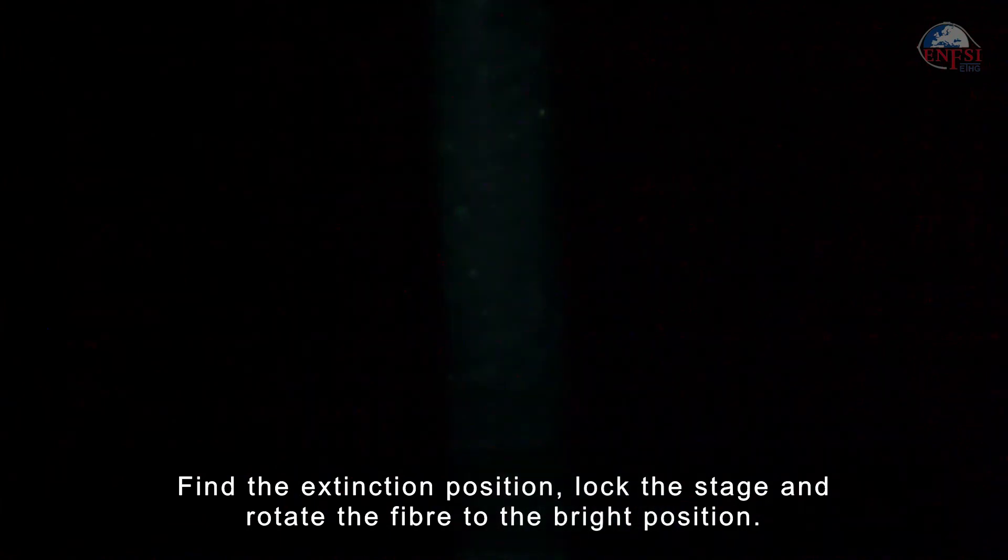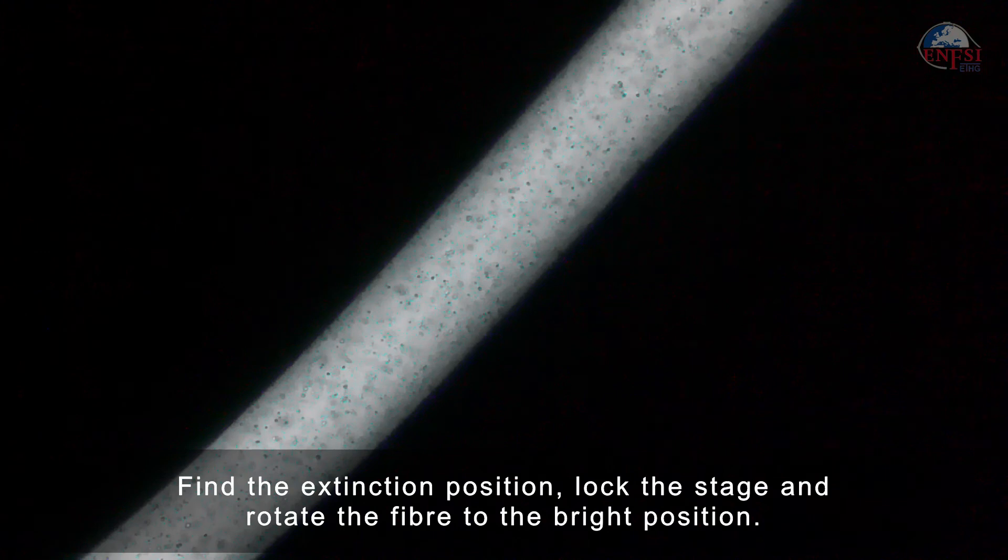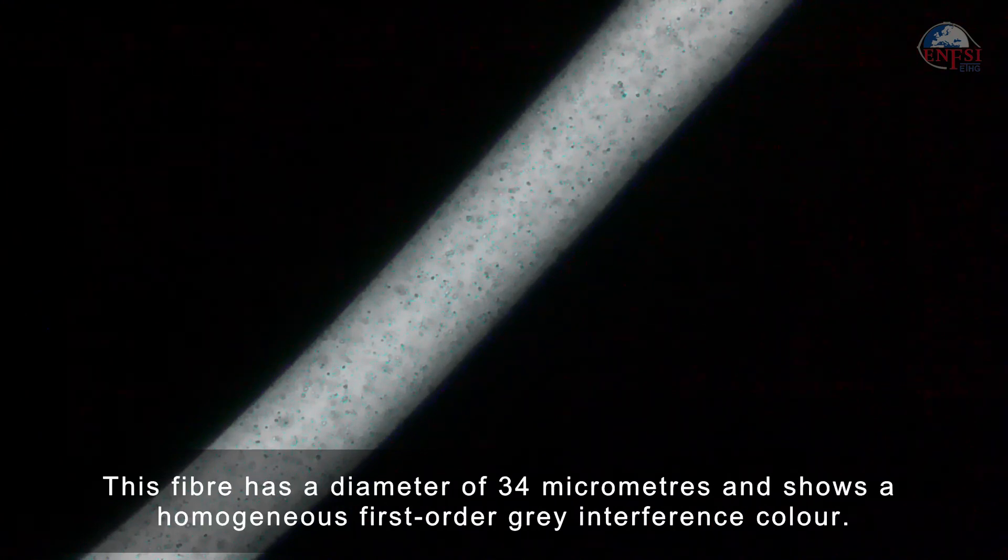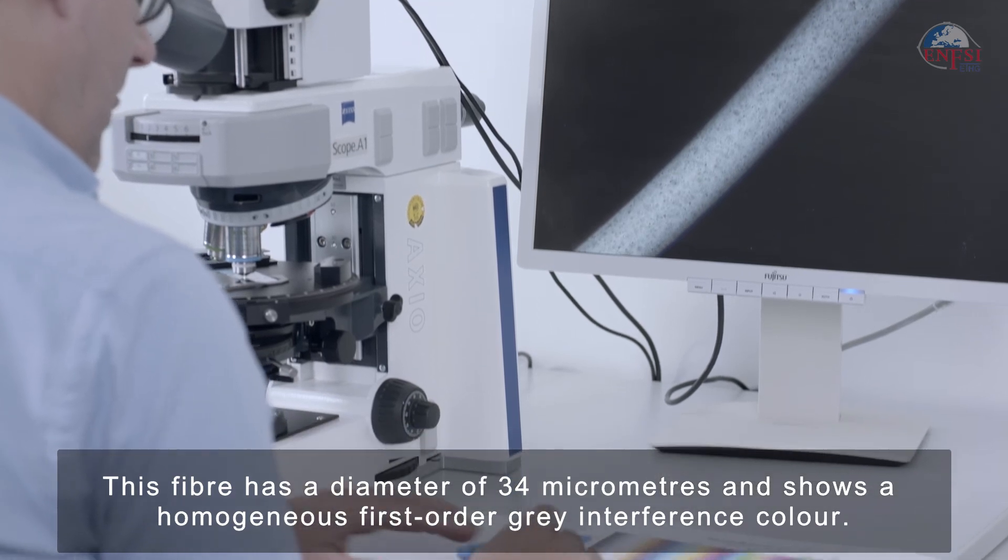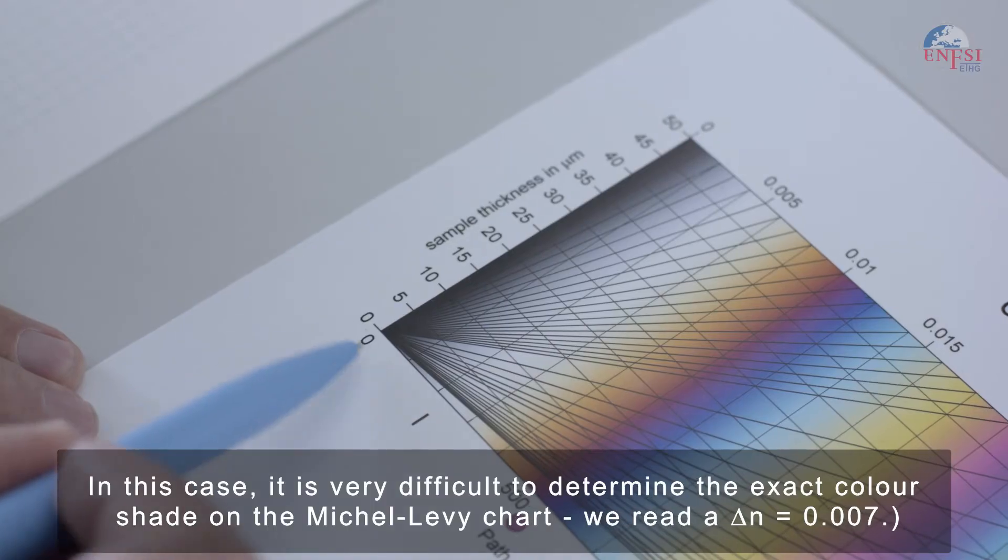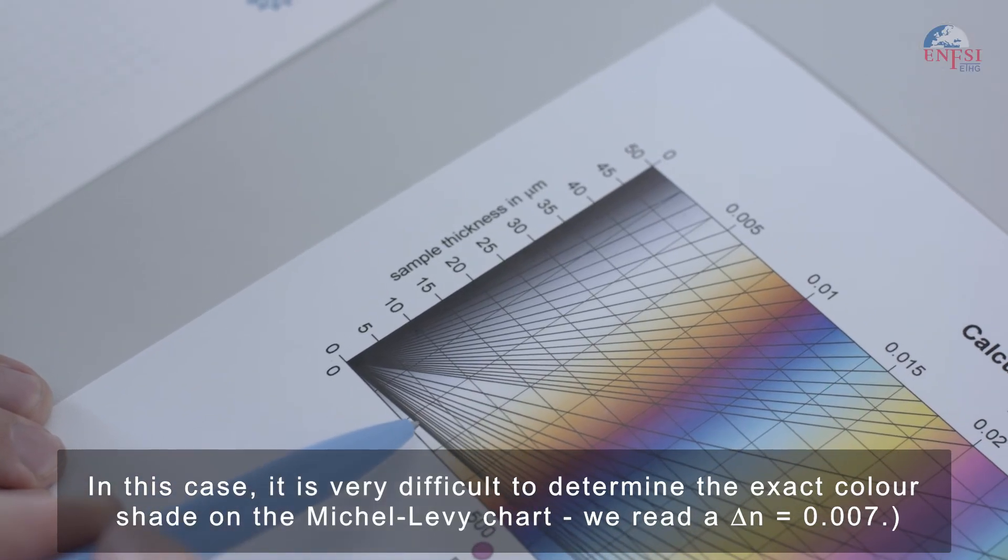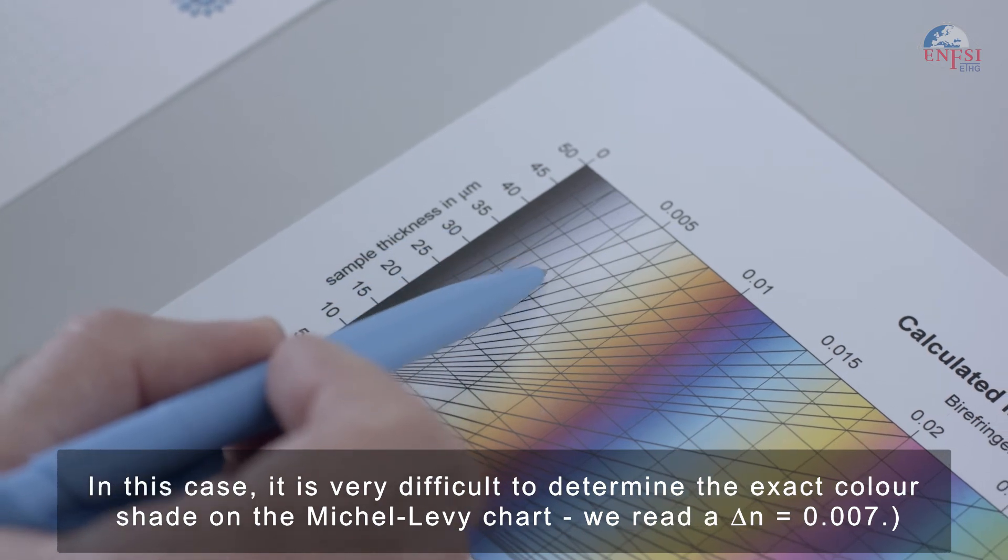Firstly, find the extinction position. Lock the stage and rotate the fiber to the bright position. This fiber has a diameter of 34 micrometers and shows a homogeneous first-order gray interference color. Thus, it has a low birefringence. In this case, it is very difficult to determine the exact color shade on the Michel-Levy chart. We read a delta N of 0.007.